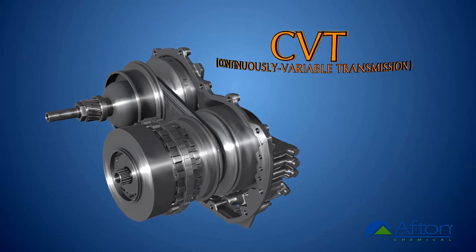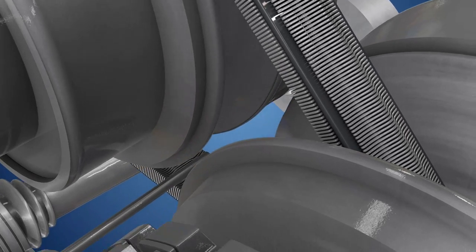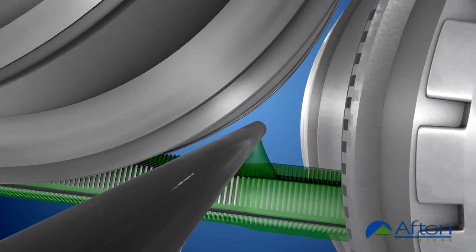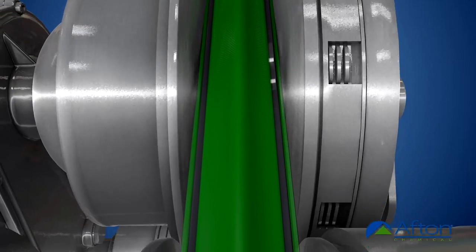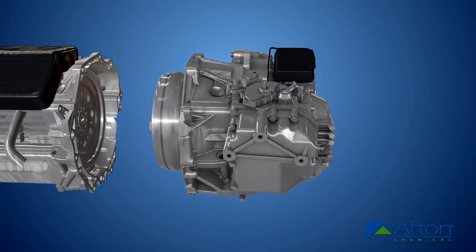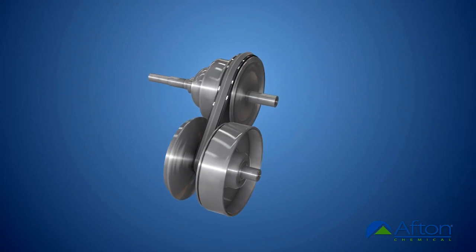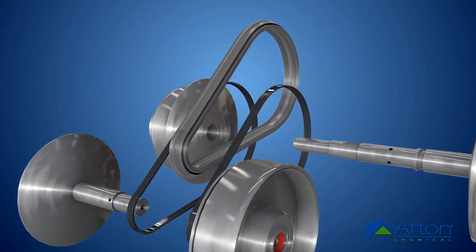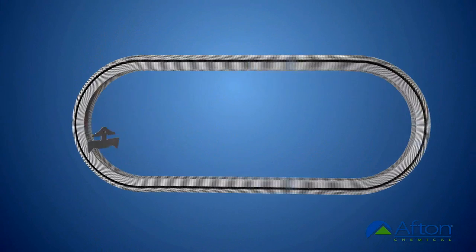This video will explain the basic operations of a CVT and why the right automatic transmission fluid is critical to its proper functioning, longevity, and driving safety. There are three main components unique to the CVT: two pulleys, also called variators, and either a push belt or a chain that connects them. We'll focus on the push belt design.